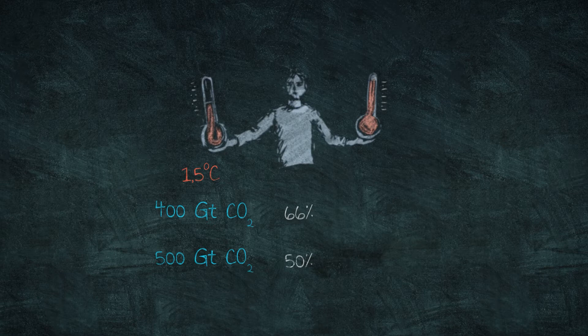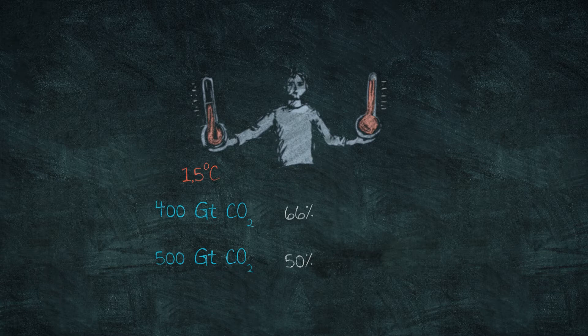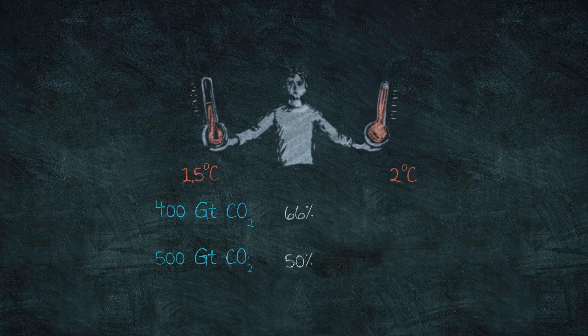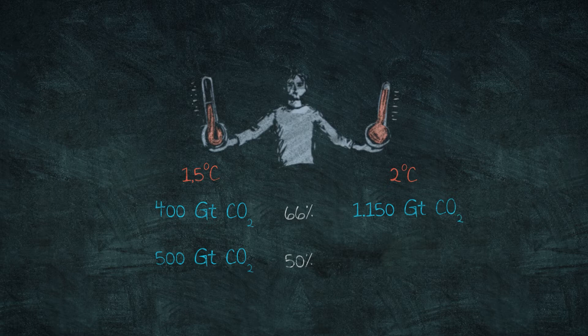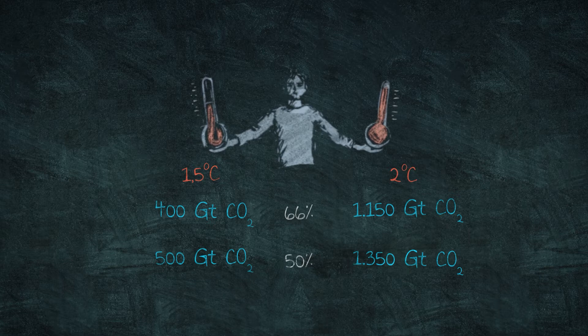These are the recent figures of the Intergovernmental Panel on Climate Change, IPCC, published in August 2021 in its current report on the physical science basis of climate change. The corresponding global carbon budget to stay below 2 degrees warming are 1,150 gigatons of CO2 at a probability of 66% and 1,350 gigatons of CO2 at a probability of 50%.